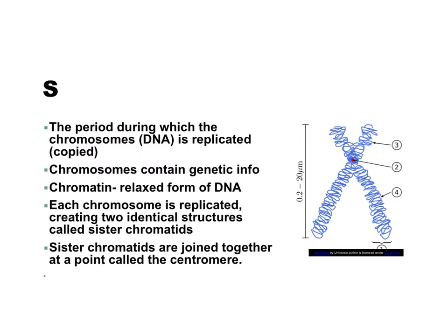The second stage of interphase is called S, which stands for synthesis. This is the period in which the chromosomes, or the DNA, is replicated — replicated just means copied. Chromosomes contain the genetic information, and chromatin is the relaxed form of DNA. Each chromosome is replicated, creating two identical structures called sister chromatids, which are joined together at a point called the centromere.